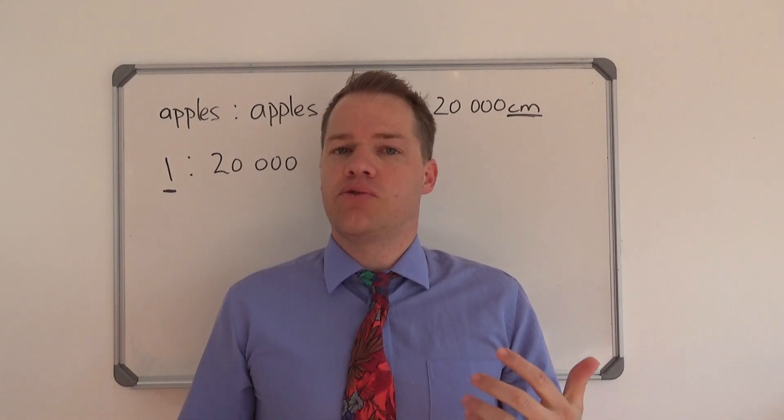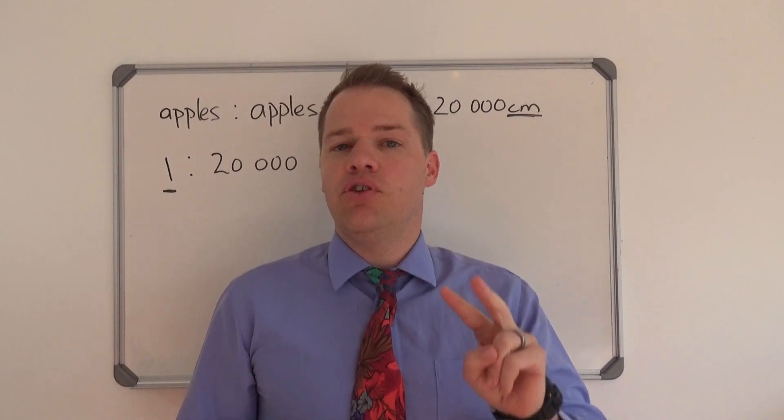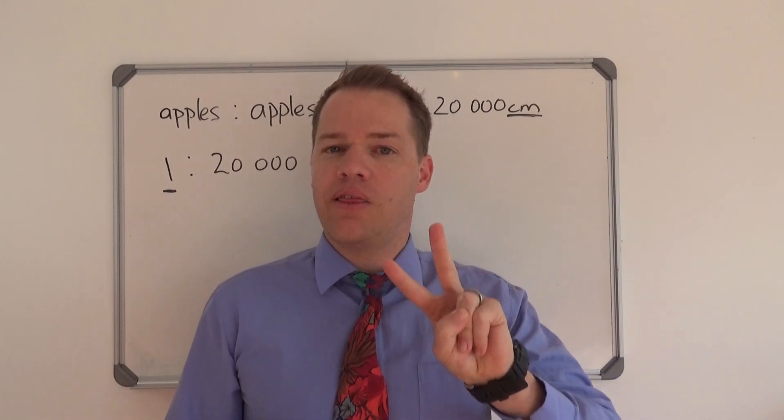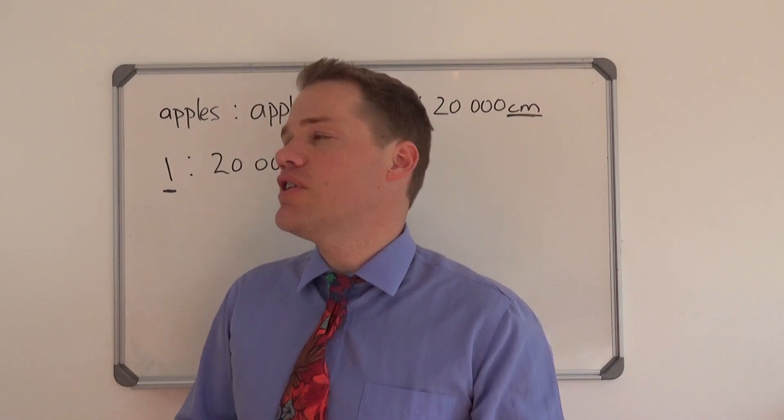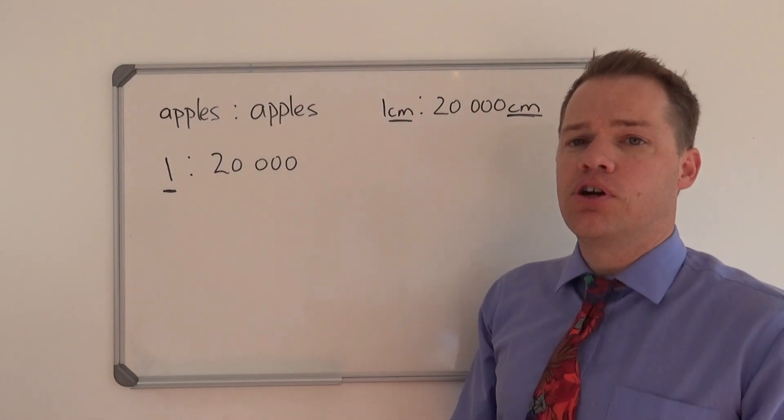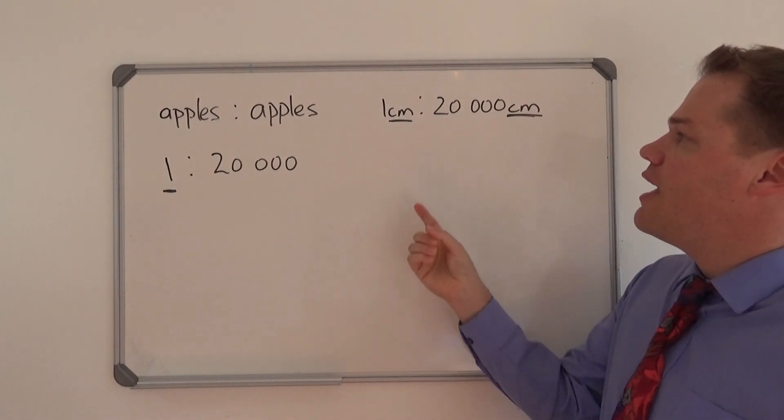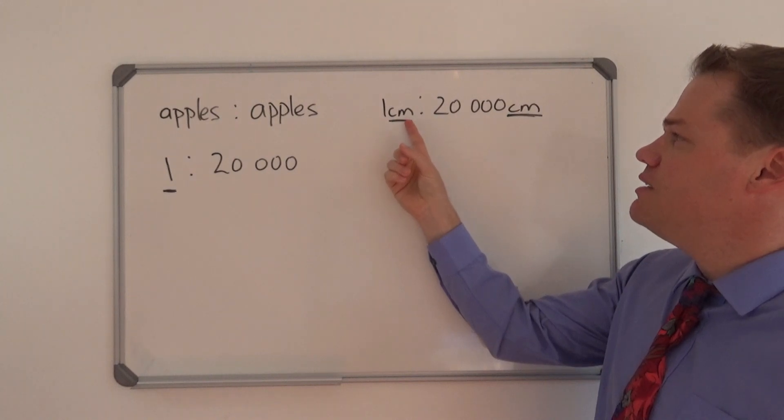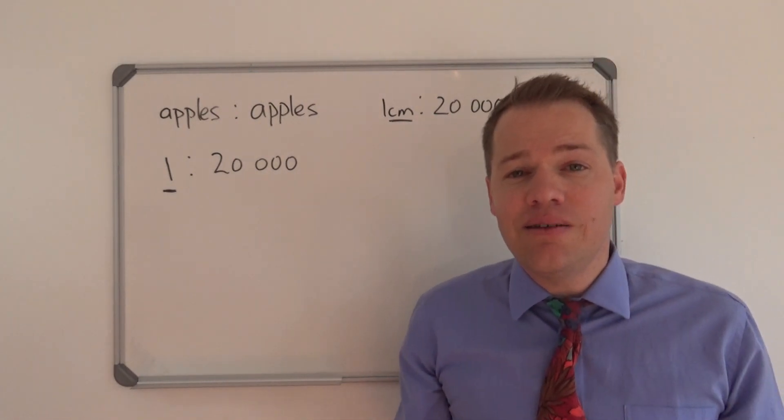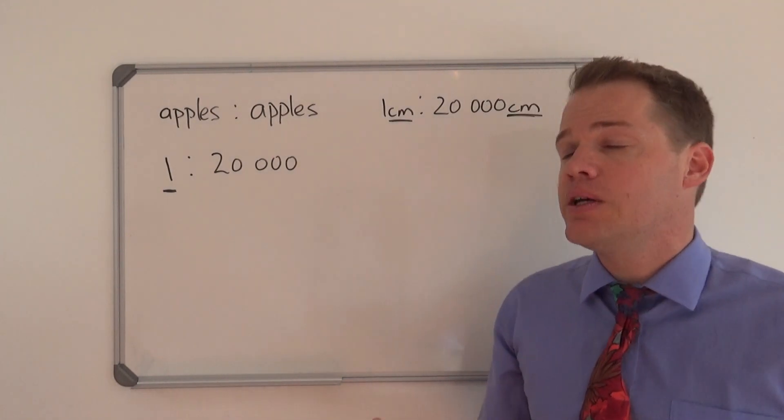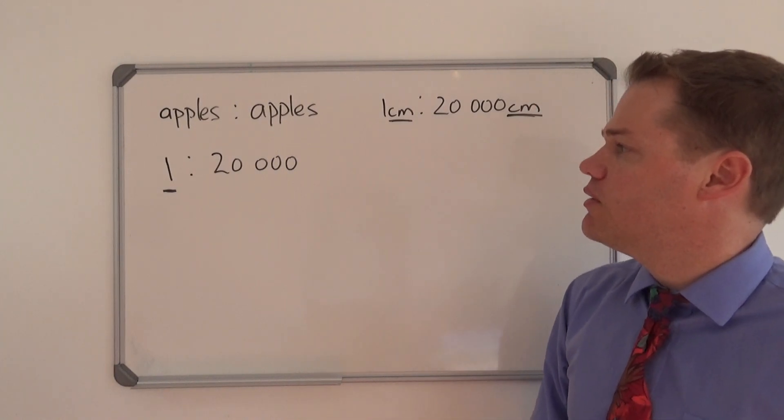Before we start with a few examples of how to convert scales, I'm going to give you two very important things you have to bear in mind. The first thing is that we have to compare apples with apples. In other words, if we have a scale, then it should be centimeters or any unit of measurement on both sides of the colon.